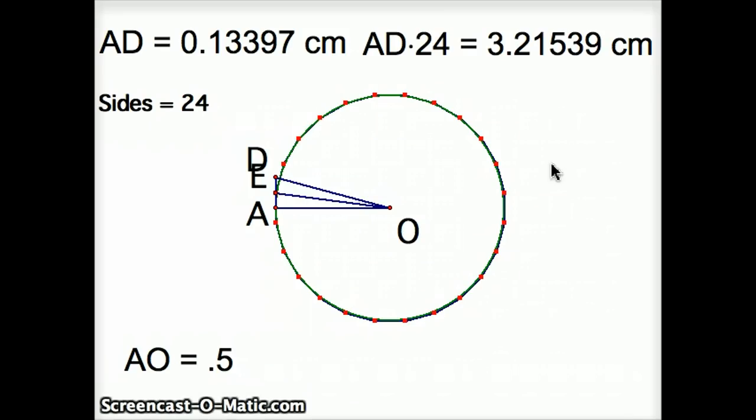And we also can calculate out the size of OD, which we're going to need. You could use the Pythagorean theorem, 0.13397 squared plus 0.5 squared, and take the square root of that.